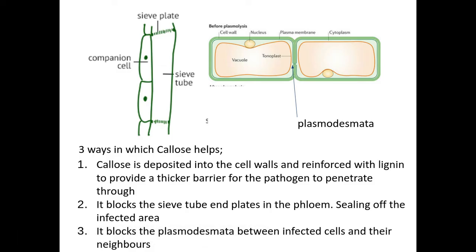Callose also blocks the sieve tube end plates in the phloem — which you learn about in transport in plants — so assimilates can't flow through during translocation. It also blocks the plasmodesmata, which are the tiny gaps between cells, and this helps to seal off the healthy cells from the infected cells.